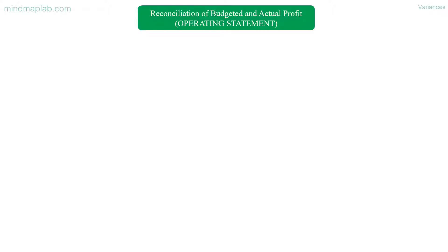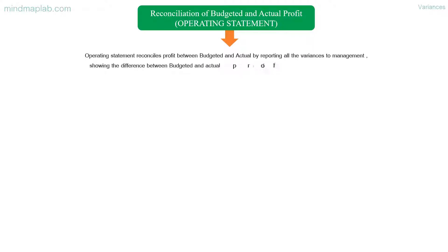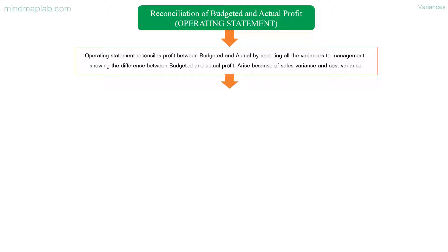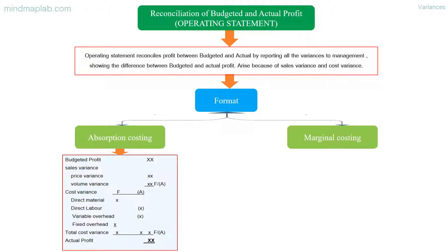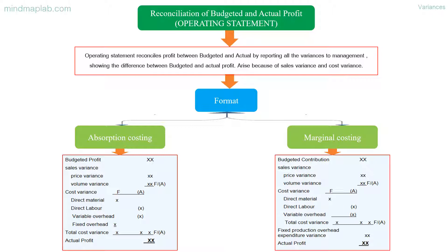Reconciliation of budgeted and actual profit — operating statement. The operating statement reconciles profit between budgeted and actual by reporting all the variances to management, showing the difference between budgeted and actual profit arising because of sales variances and cost variances. For absorption costing: starts with budgeted profit, lists sales variances, then cost variances; the total variance, whether favorable or adverse, is added or deducted from budgeted profit to give actual profit. For marginal costing: starts with budgeted contribution, then lists sales variances and cost variances; the total variance is similarly added or deducted from budgeted profit to arrive at actual profit.